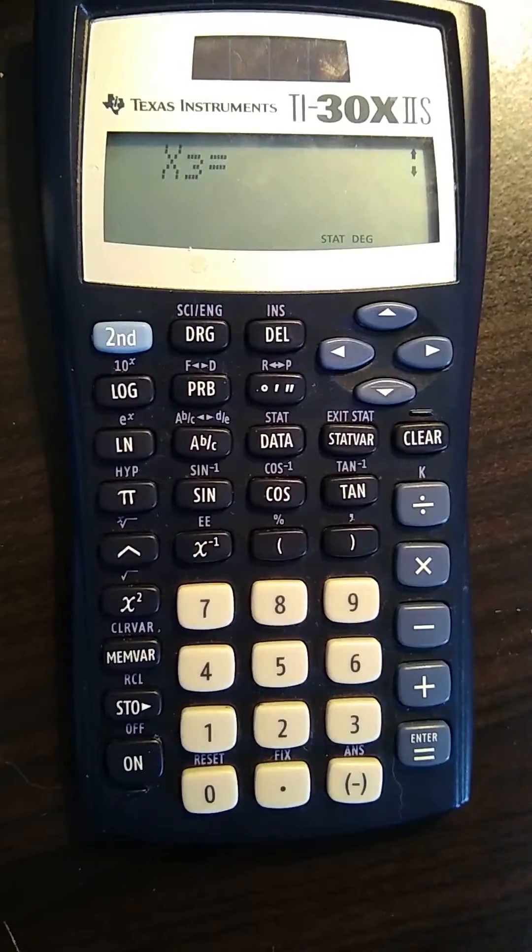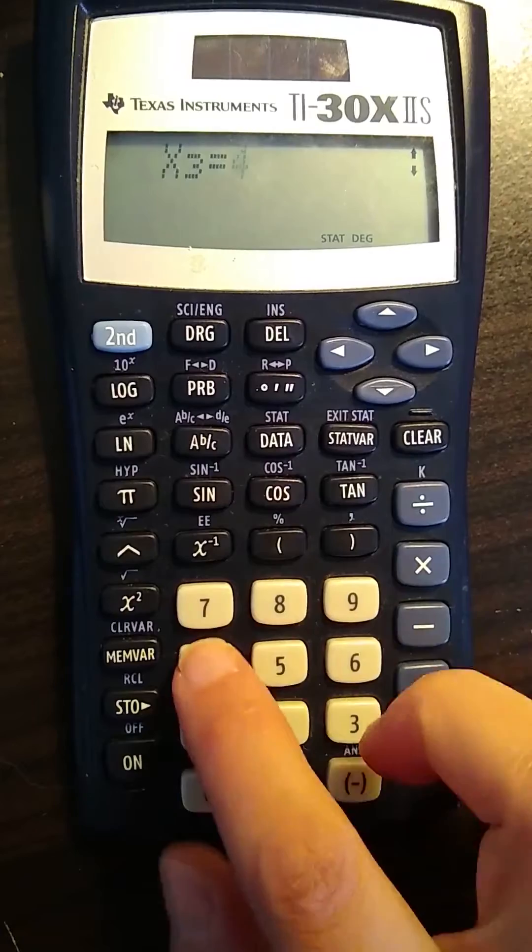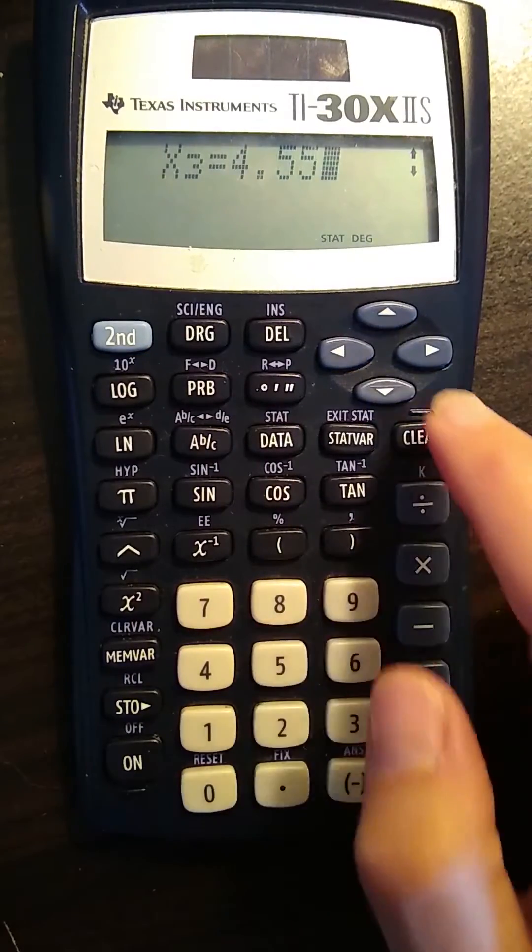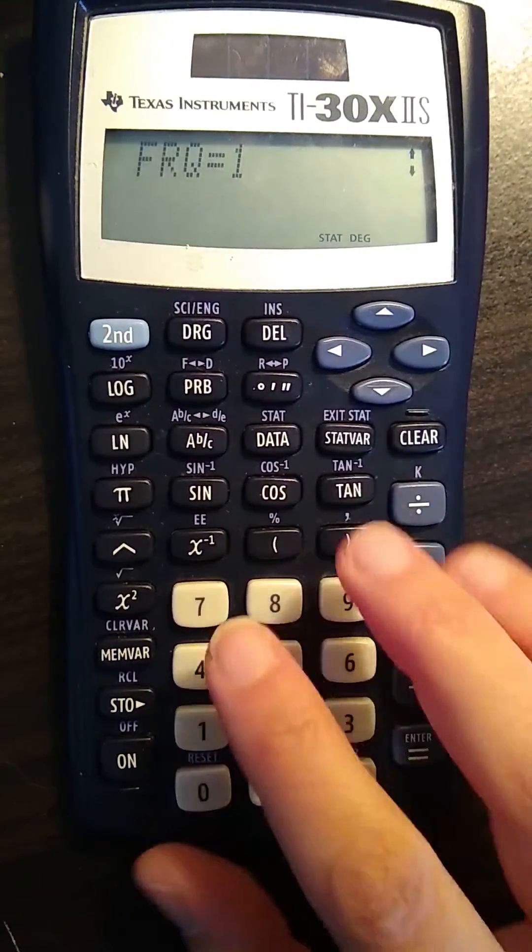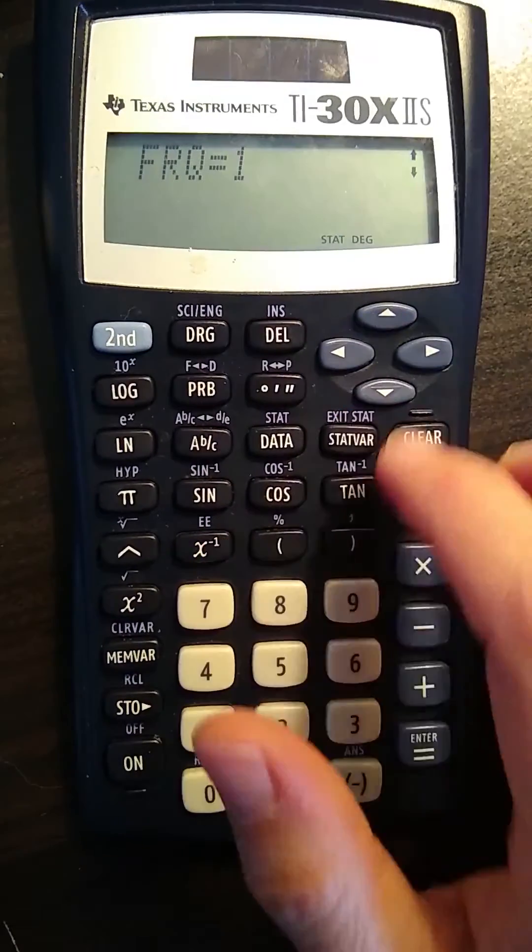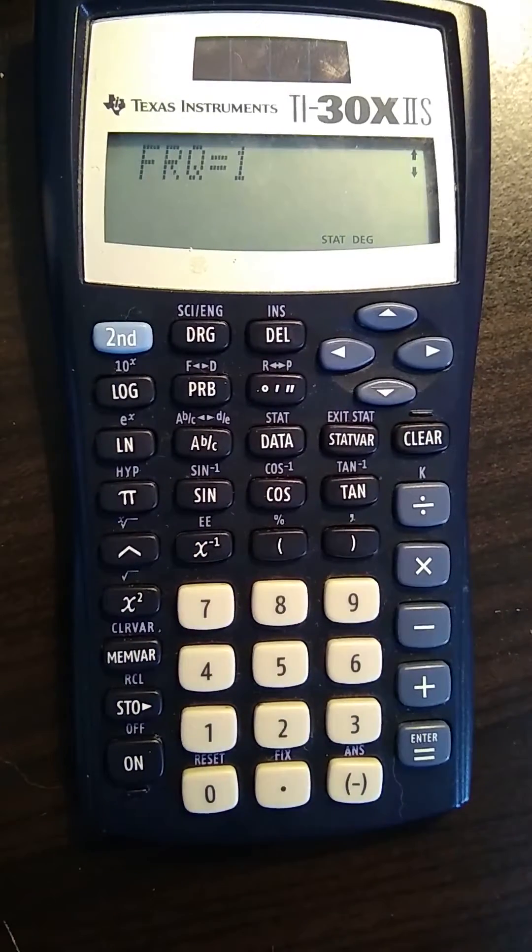Okay, down down and then put in a third value. Okay and then press down or enter. So now I have three values entered.